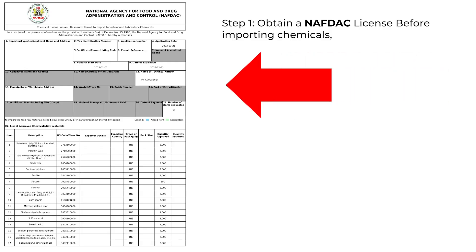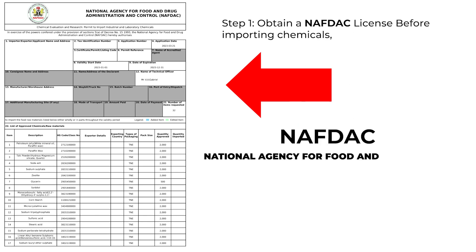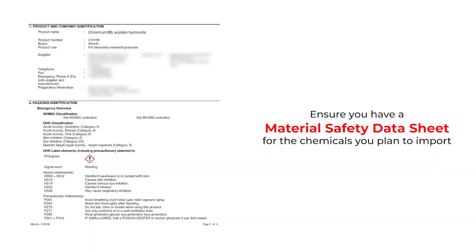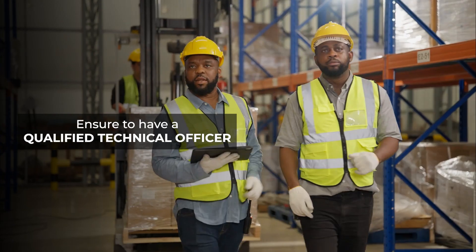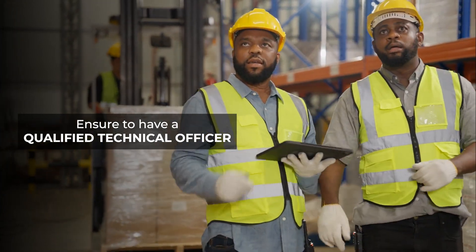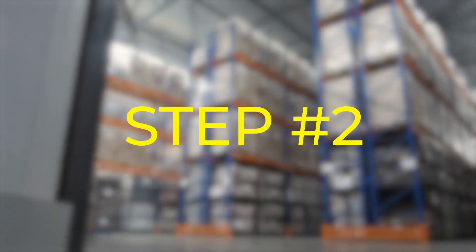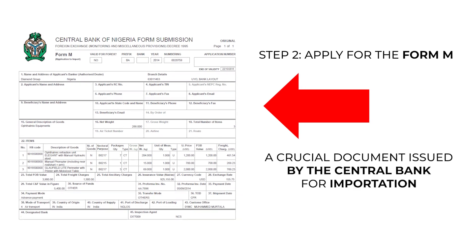Step 1: Obtain a NAFDAC license. Before importing chemicals, you must obtain a National Agency for Food and Drug Control license. This requires having a registered company in Nigeria. Ensure you have a Material Safety Data Sheet for the chemicals you plan to import, a qualified technical officer, and a safe warehouse.